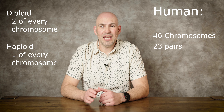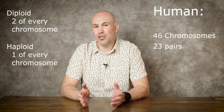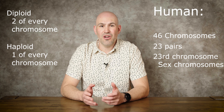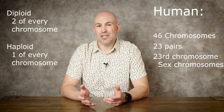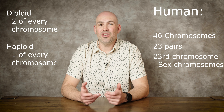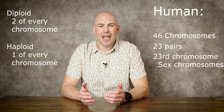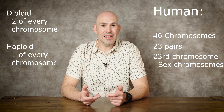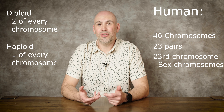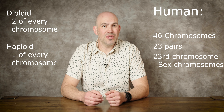I got one set from my mom and I got one set from my dad. So we say we have a total of 46 chromosomes, but I have 23 pairs of chromosomes. We numbered them — there's chromosome one, chromosome two, chromosome three. I have two of chromosome one, two of chromosome two, two of chromosome three, two of chromosome four, all the way up to chromosome 22.